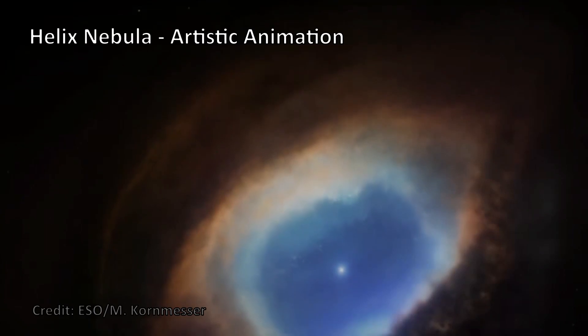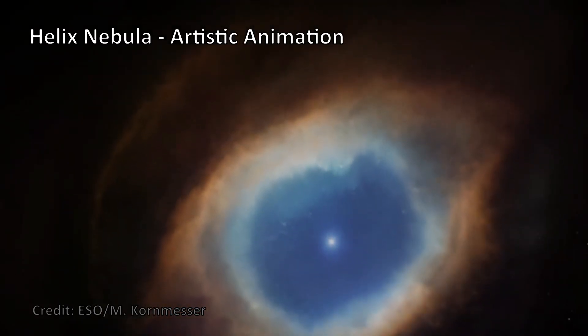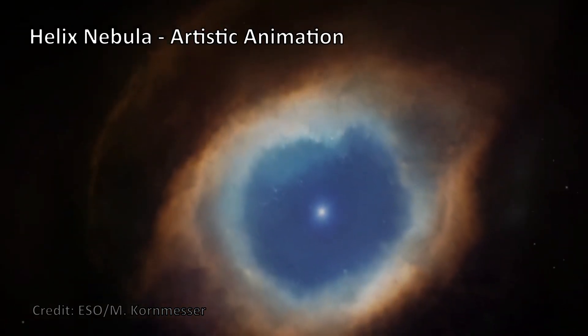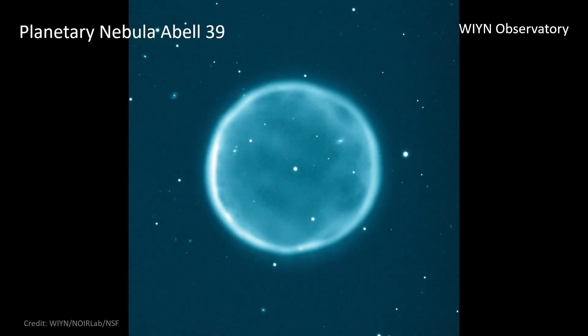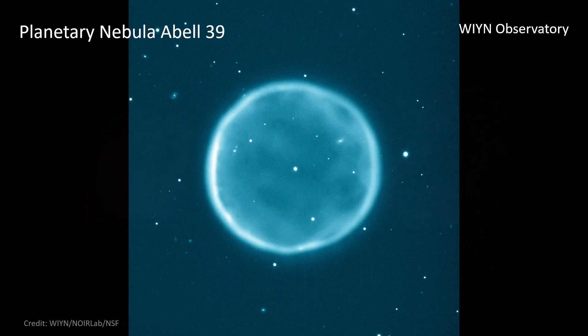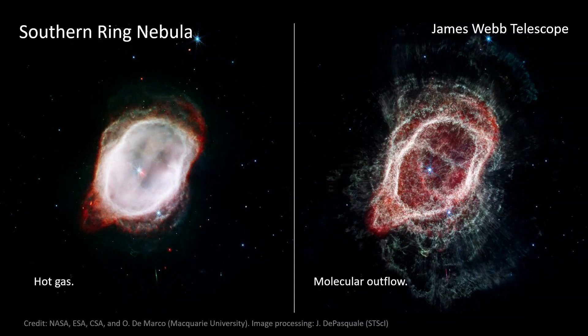Despite their misleading name, planetary nebulae are not related to the planets. Their name is derived from the historical fact that some of these objects look circular when observed through small telescopes, bearing some resemblance to the planets.